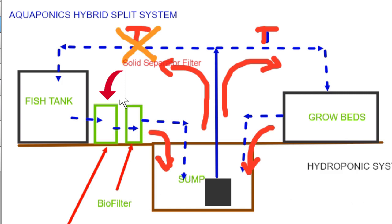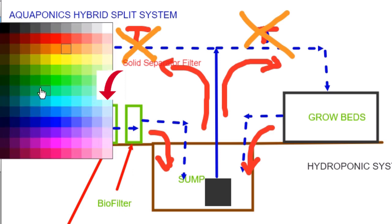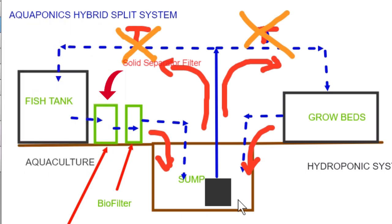The reverse also applies. If you can't get seedlings or you just don't want to grow vegetables for a while and only want to keep your fish going, you close off the valve to the grow beds. Water then flows only through the fish tank circuit, and what you have then is an aquaculture system — another name for fish farming. So that's the split system, very quickly explained.